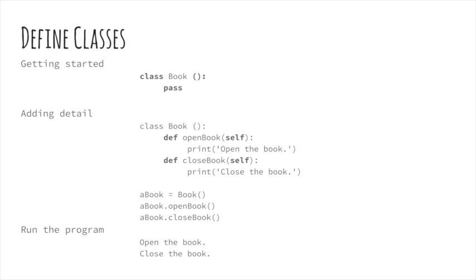It worked. A virtual book was created by specifying a class name with the required arguments — in this case, there were no arguments. The virtual book or object was assigned to the variable aBook, and aBook has the type object. Once the object was created, the methods could be used and the messages printed.